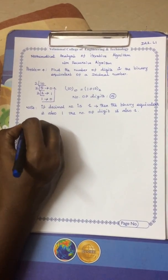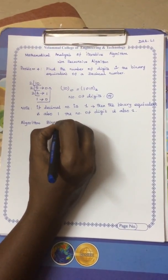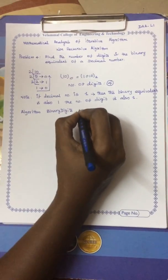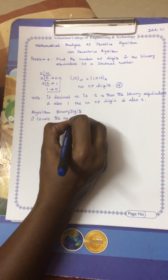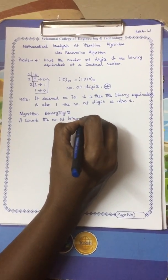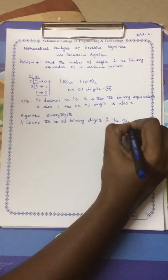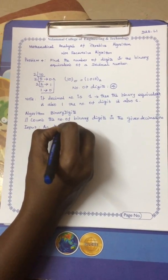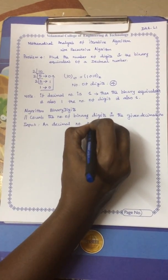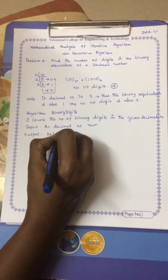Now we are going to write the algorithm. The algorithm starts with the keyword 'algorithm' and the name 'BinaryDigits'. We are going to count the number of binary digits in the given decimal number. The input is a decimal number NUM and the output is the returned count.